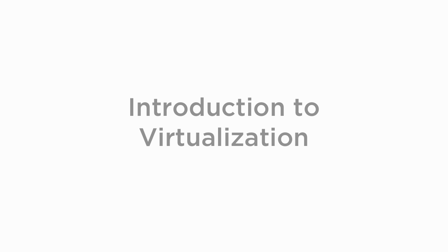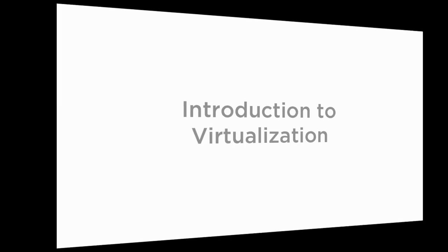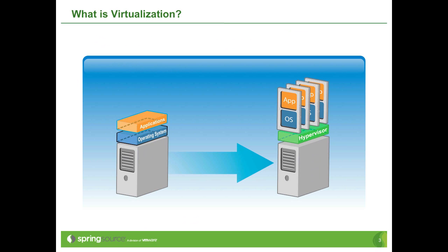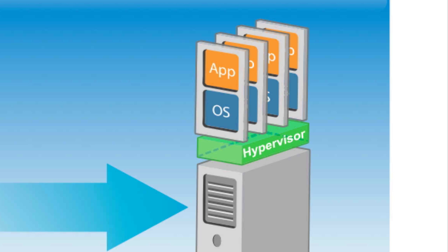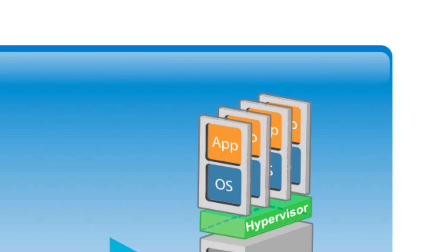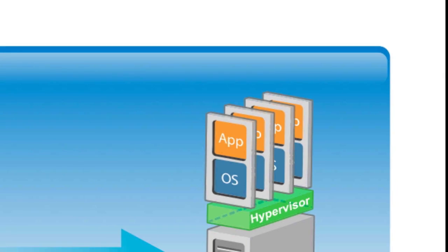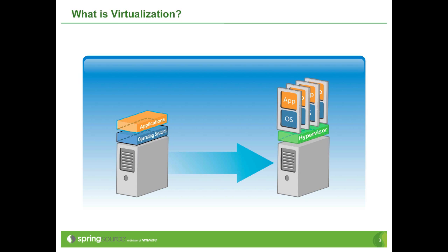First, a quick introduction to virtualization. Virtualization removes the one-to-one relationship between a piece of hardware and an operating system. This is done using a hypervisor, which abstracts out the hardware layer, allowing us to create virtual computers or virtual machines.